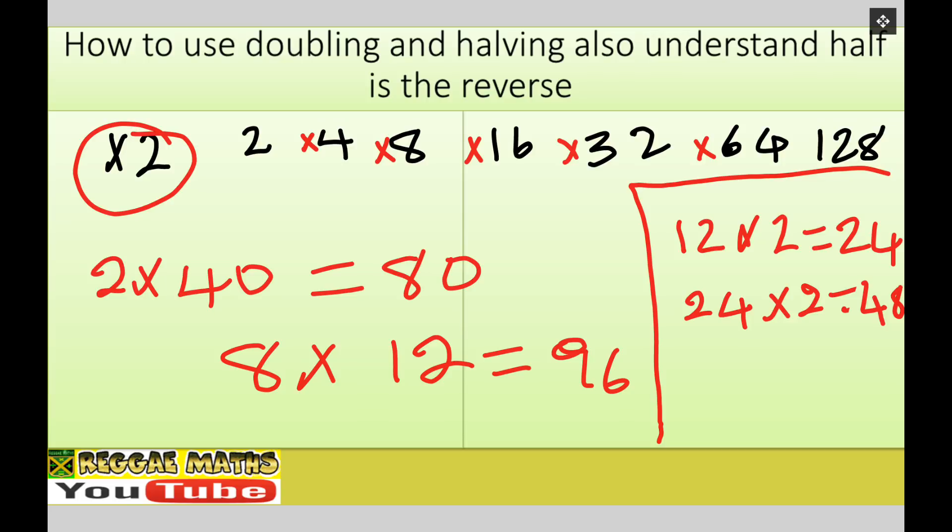And if I double 48, that's going to give me 96. So by just doubling, double it's four, double two times is four times, double four times, it's going to give me eight times, okay.